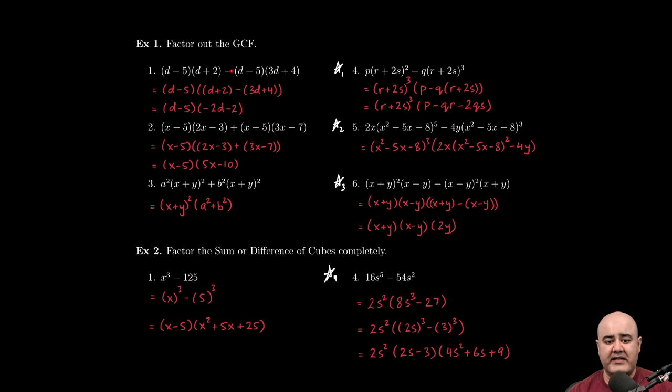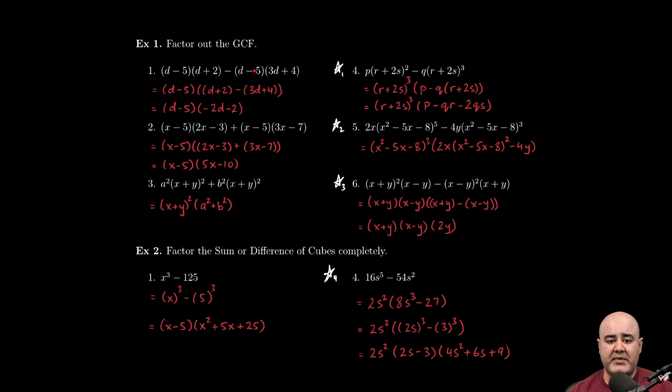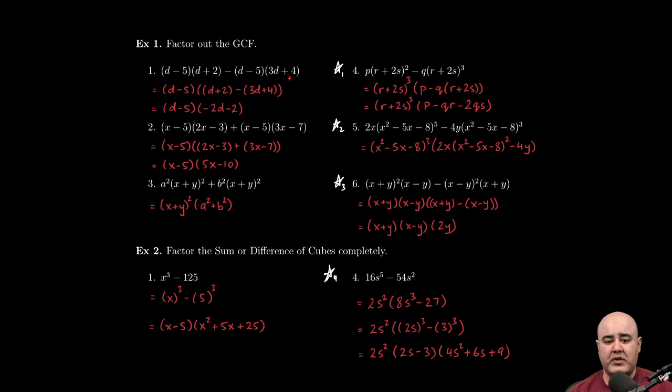There's a minus, so that means, end of first term, beginning of second term. The second term is (d - 5) times (3d + 4). So all of this is being multiplied together. This is considered one term. This is all being multiplied together. This is considered one term as well.